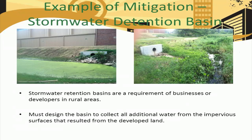A common mitigation practice that you may be familiar with is the stormwater detention basin. These basins are sometimes a requirement for businesses or developers in rural areas. Stormwater detention basins are tied to the downspouts of a building structure and reduce runoff volumes in a similar manner to green roofs, by holding rainwater in a pond-like structure and slowly allowing it to infiltrate into the ground. Typically, these basins are designed to collect and hold all potential rainwater runoff that results from the development of a building site.